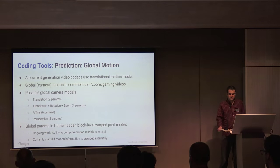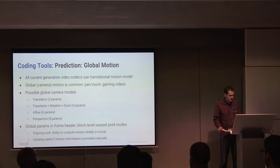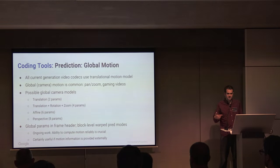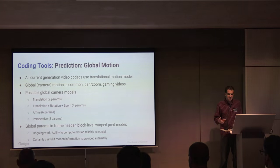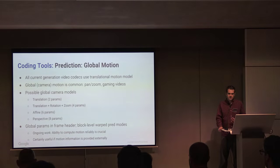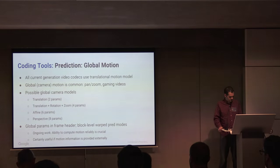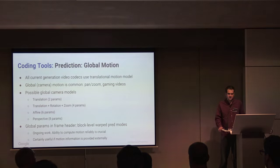Another thing we've looked at is global motion, resurrected from the dead. Especially with pan and zoom for gaming videos, we have translation and global motion, which is fairly straightforward and can be done with motion vector prediction for free anyway. But we can also add rotation and zoom. There are two ways to go about it: at a block level, or by creating distorted reference frames and predicting from those. Right now it's only really useful with either externally provided motion or with very artificial motion.